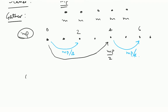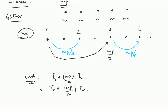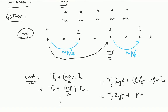What is the cost of performing this operation? Let us go iteration by iteration. The cost of the first iteration is Ts plus mp times Tw. The second iteration is Ts plus mp by 2. Then Ts plus mp by 4 Tw and so on. The total sum is Ts log p plus p minus 1 times m Tw.